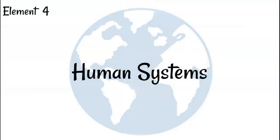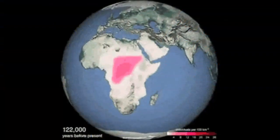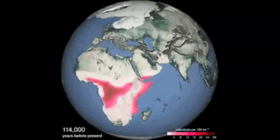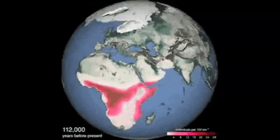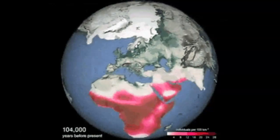The fourth element is human systems. Geography isn't just the study of where things are — people are central to the study of geography. Human activities such as trade, migration, settlement, and warfare affect where and how people live. Here you can see the history of human migration. As the years progress, the populations of different areas grow and shrink depending on varying factors.